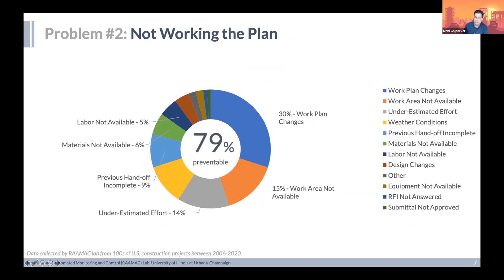The second issue is that many companies have become good at putting together milestones and long-term plans, but when it comes to understanding how we can execute tasks every day and every week, there's a lot of room for improvement. I've been capturing data for many projects, and the analysis shows there are many reasons that short-term plans — our weekly work plans and look-ahead schedules — are not achieving the goals we desire: plans change, work areas are not available, underestimated effort, and so on. But if you look closely, almost 80% of them are preventable.